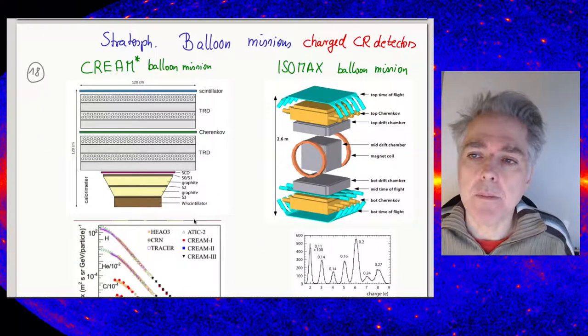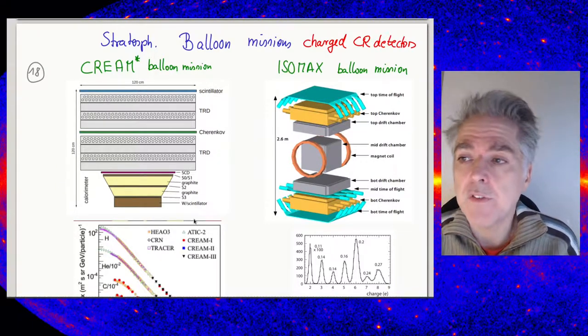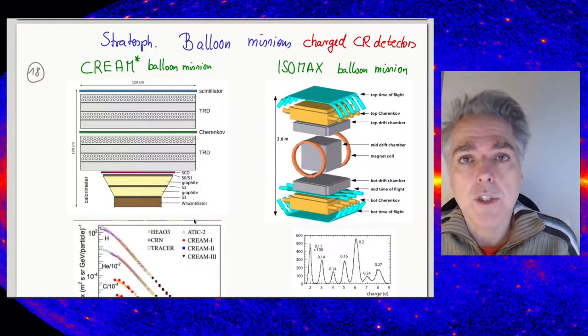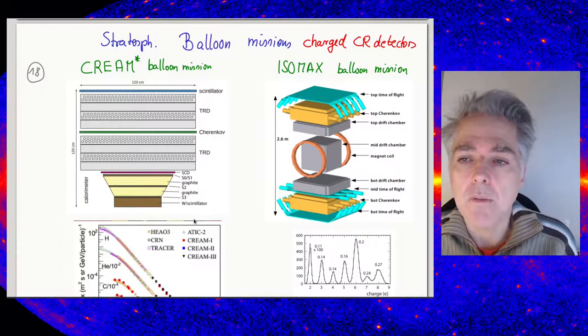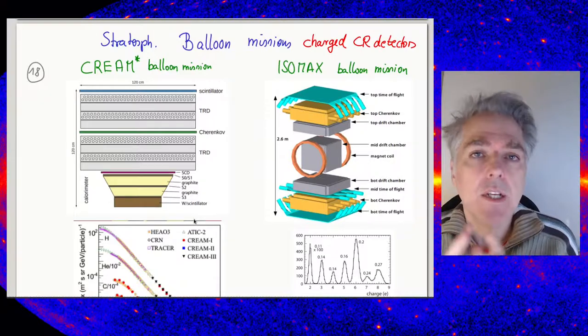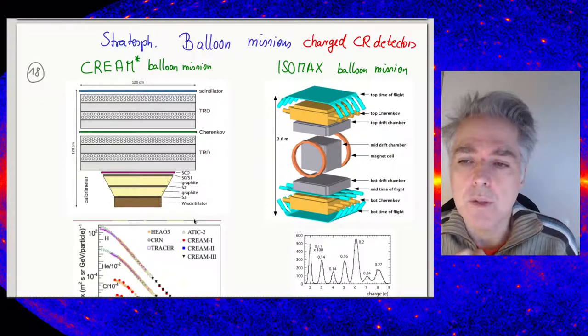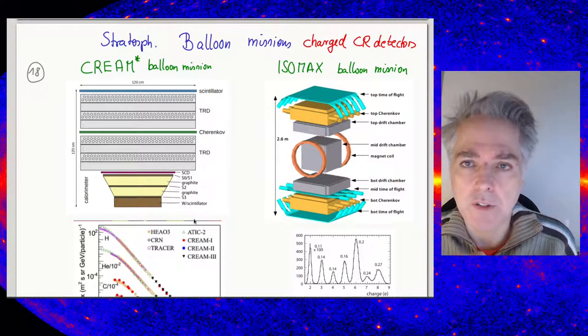Let's talk about balloon missions which have really been flown and are continuing to fly, used for charged cosmic ray detection. I've put up here two examples: the CREAM balloon mission and ISOMAX. They are really representative for these kinds of missions. They look different, but intrinsically they share lots of similarities.